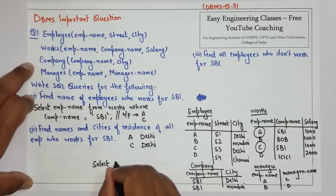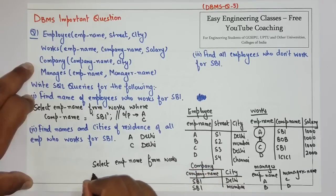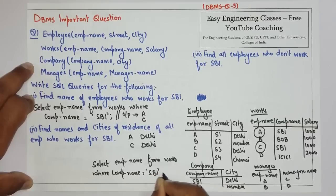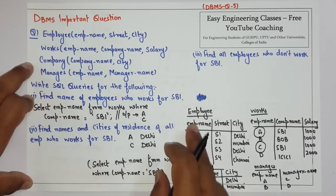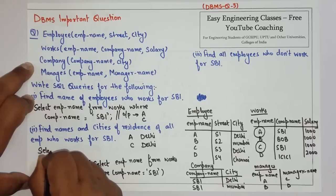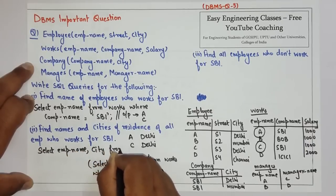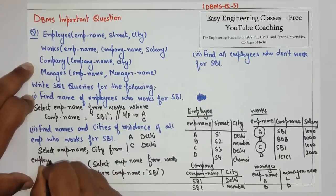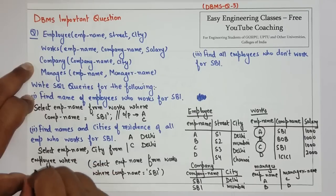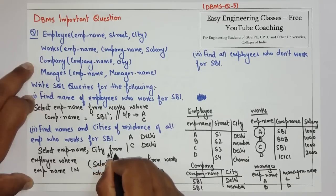We use the same inner query: SELECT EMP_name FROM works WHERE company_name = 'SBI'. Then to find the name and city, we use a nested query: SELECT EMP_name, city FROM employee WHERE EMP_name IN (SELECT employee_name FROM works WHERE company_name = 'SBI'). The output of the inner query will be A and C.